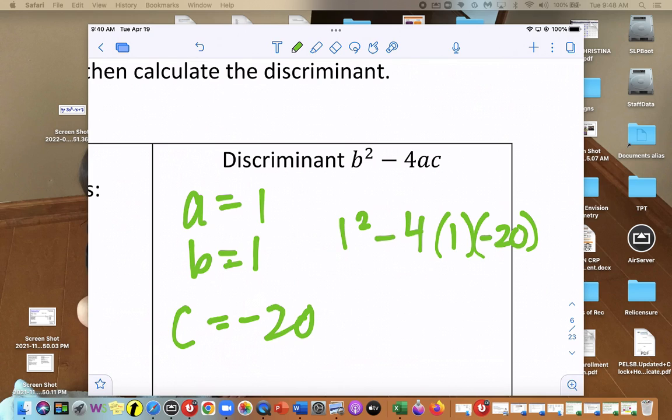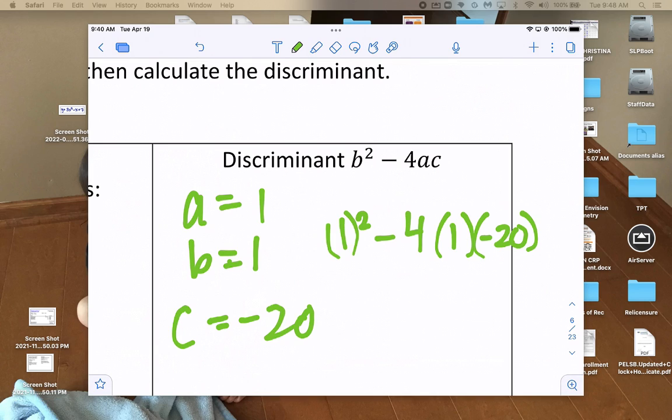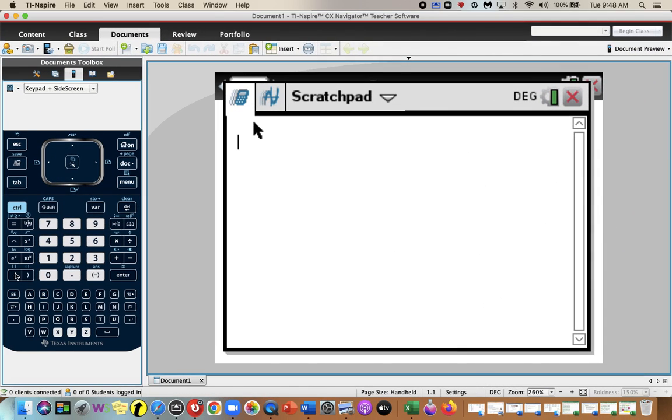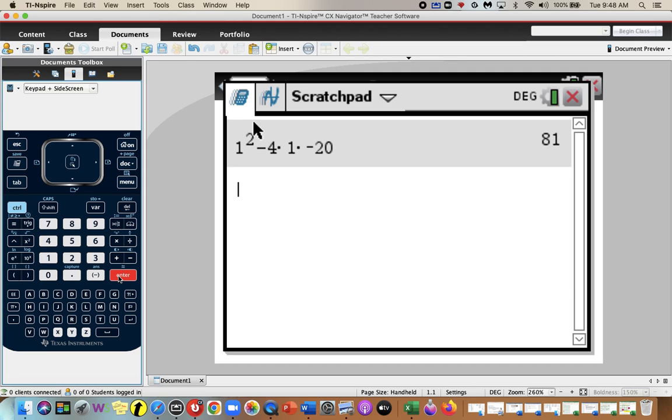And we can just type that right in. So let's type that into our calculator. So we'll have 1 squared minus 4 times 1 times negative 20. So that discriminant is 81.